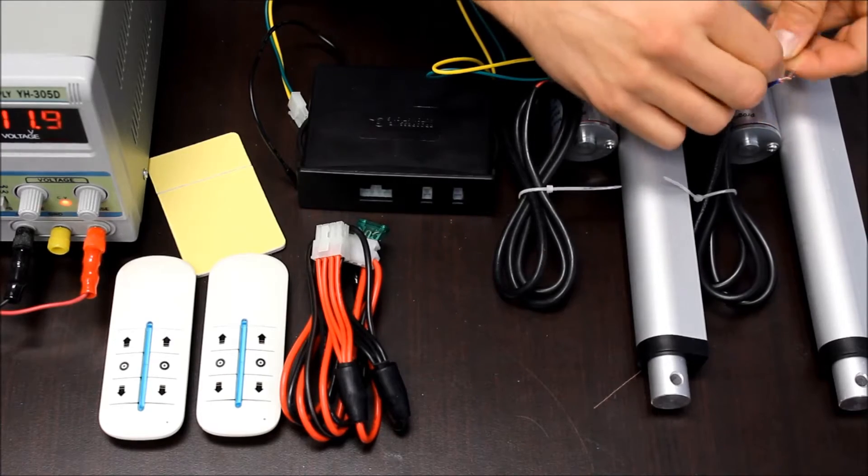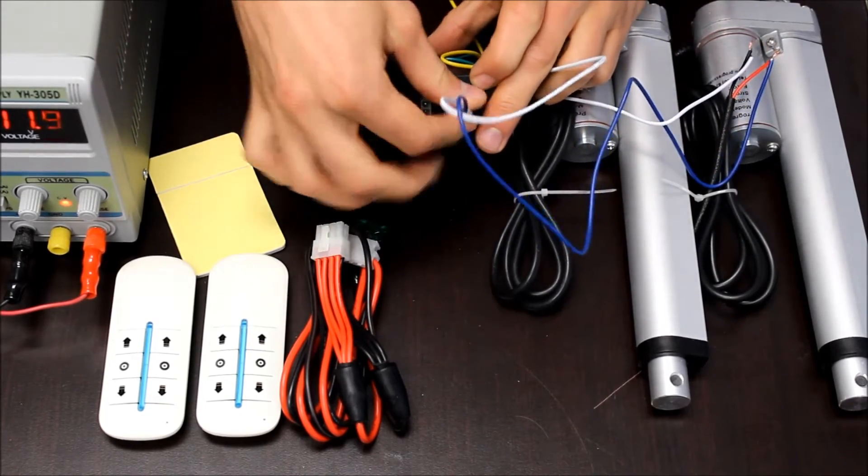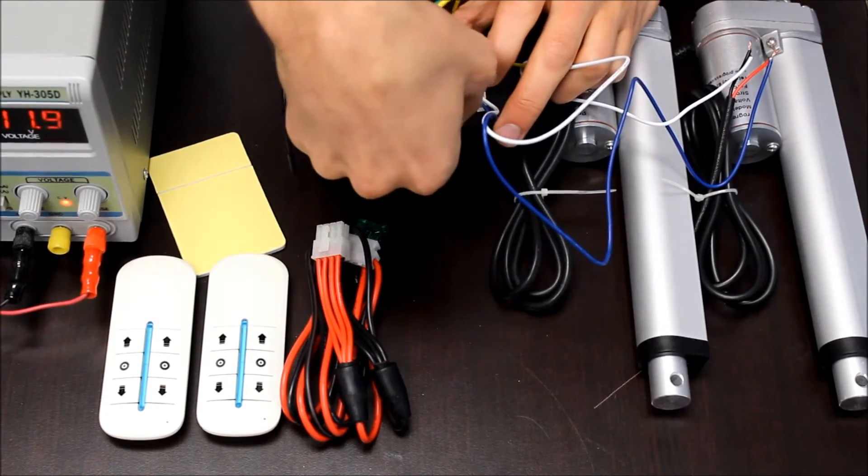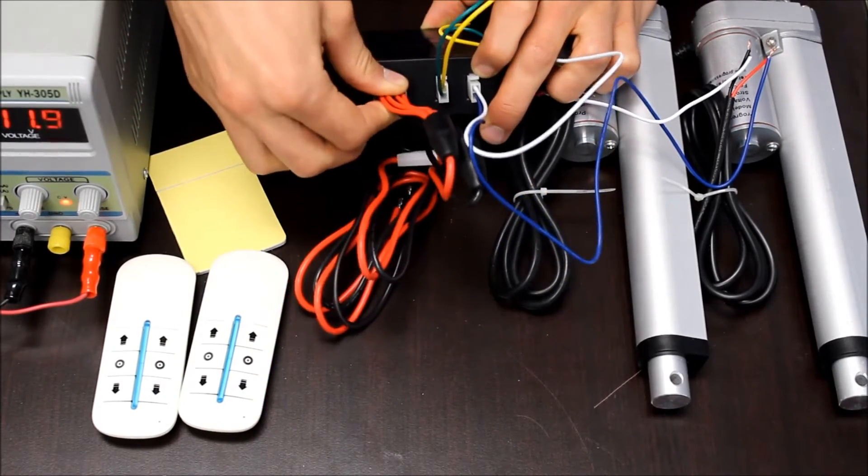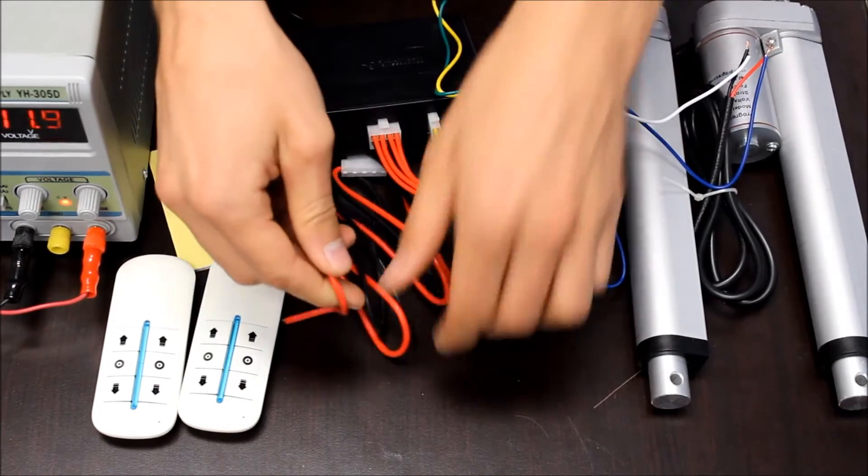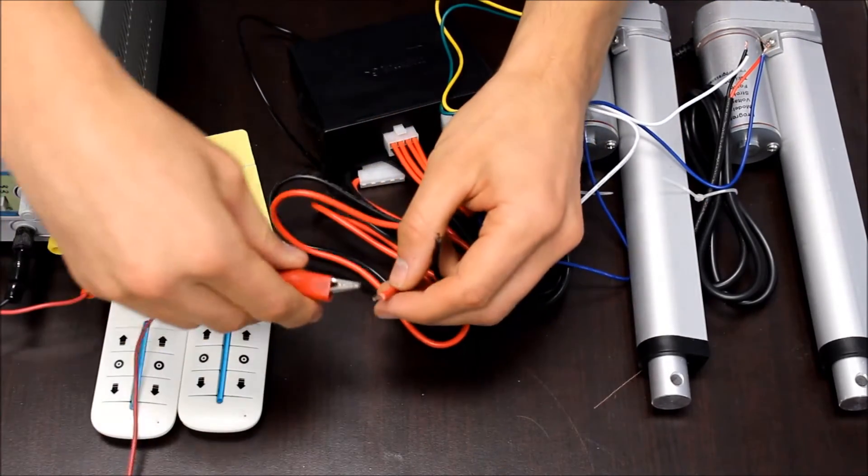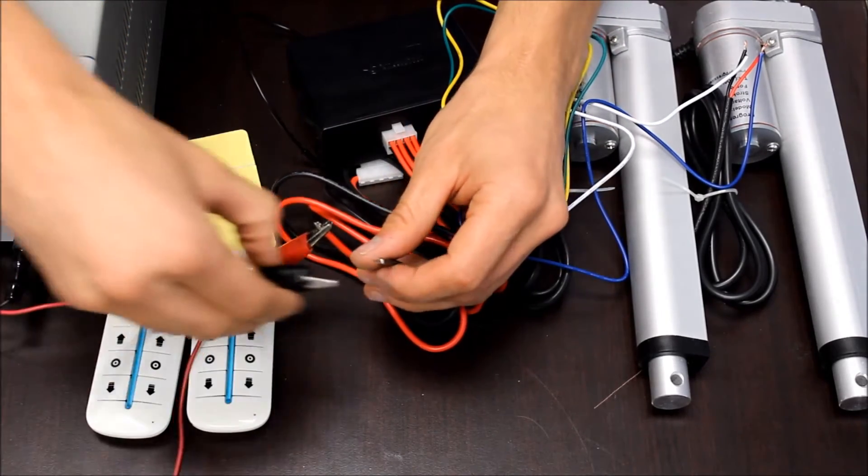Once your actuators are connected to the wiring harnesses, you can plug them into the front of the control box. Next, take your power wiring harness and connect that as well, then connect the two wires on the end to your power supply. The red wire connects to positive 12 volts and the black wire connects to ground.